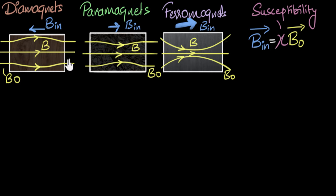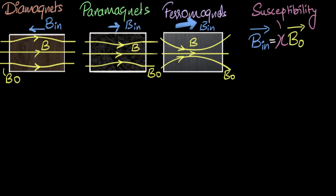Before looking at susceptibility values for common materials, think about whether the values would be high or low, whether they'd be positive or negative, and what the units would be. The units: since both sides of the equation are magnetic fields, chi is a unitless, dimensionless number.